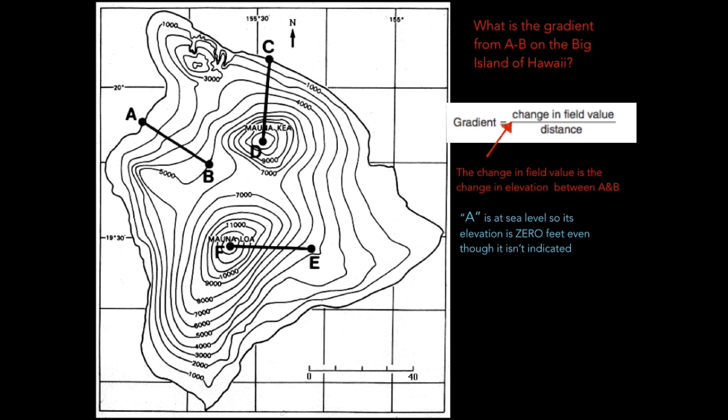A is at sea level. Oftentimes on a map, sea level is not given a number. You just need to know that's zero feet. Sea level is zero feet elevation. There would be water surrounding this island.